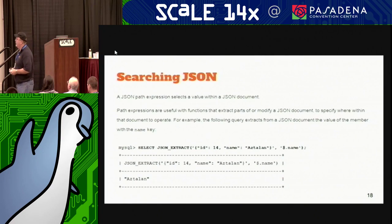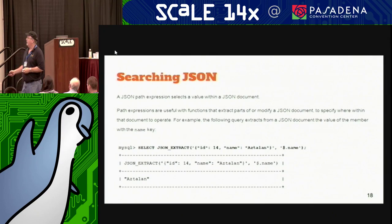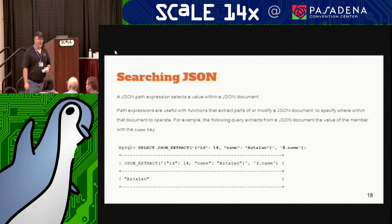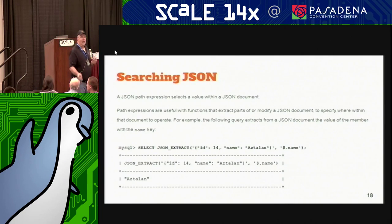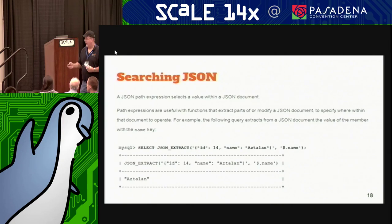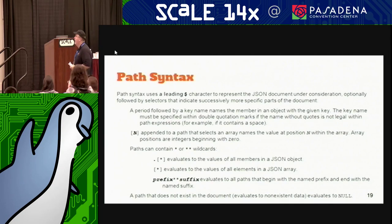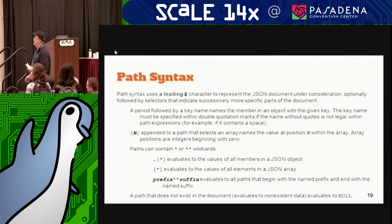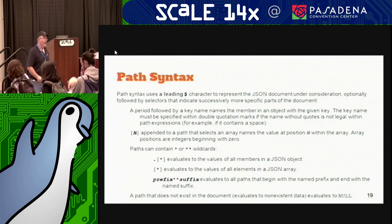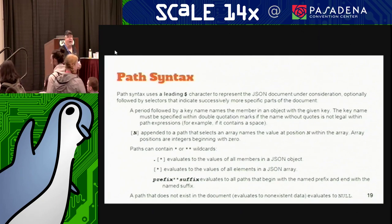To look through a JSON string and get a value: here's a case where we have id=14 and the name is Azitlan. We're extracting using dollar-dot-name notation — that's what the dollar-dot stands for — and it pulls up Azitlan. When you're throwing a document into a column, you need special notation and special functions to dig down into that document and pull out the values. The path syntax uses a leading dollar sign to represent the document you're currently working on — think of this in PHP as your this-arrow, whatever object you're looking at.